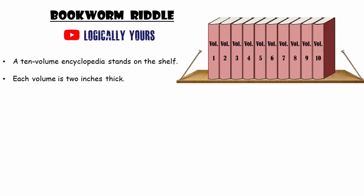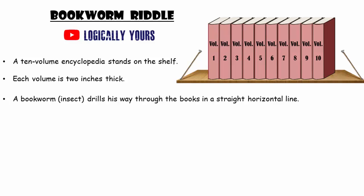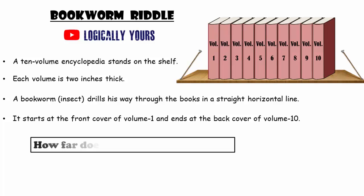A 10-volume encyclopedia stands on the shelf. Each volume is 2 inches thick. A bookworm drills his way through the books in a straight horizontal line. It starts at the front cover of volume 1 and ends at the back cover of volume 10.